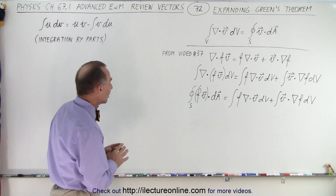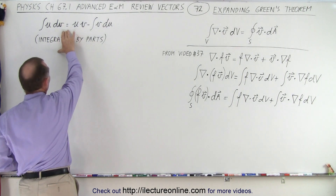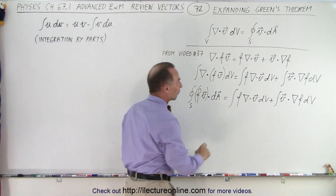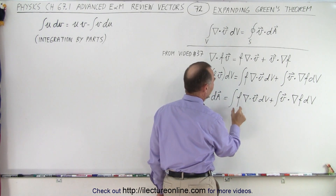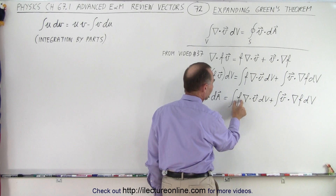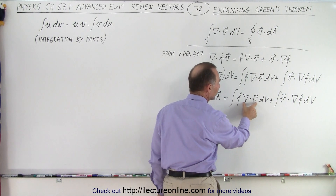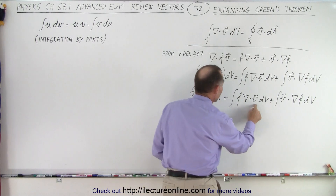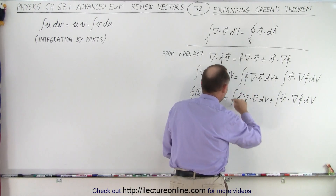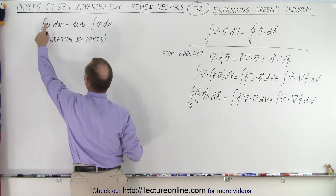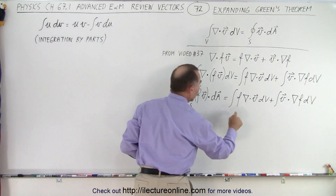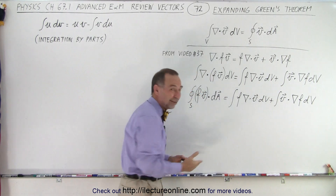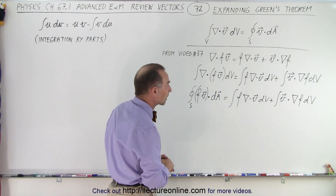Now we want to take a look at this concept of integration by parts, where we have the integral of u dv. Notice we have the product of the function times the divergence of V — and essentially the divergence of V is the derivative of V. So this looks very similar to the integral of u dv: the integral of f times essentially the derivative of V, which is the divergence of V.